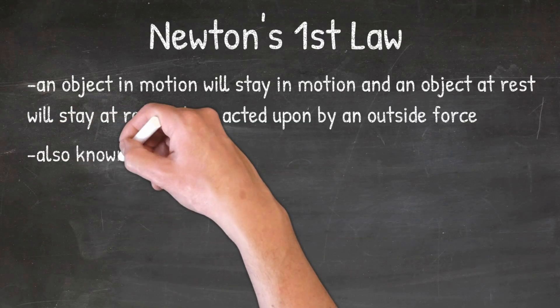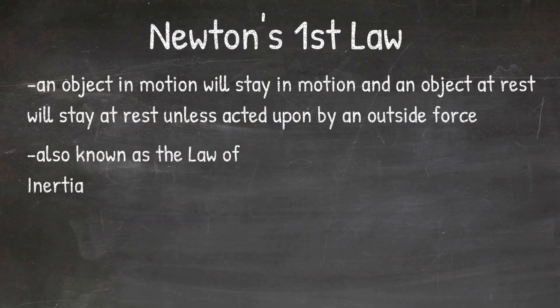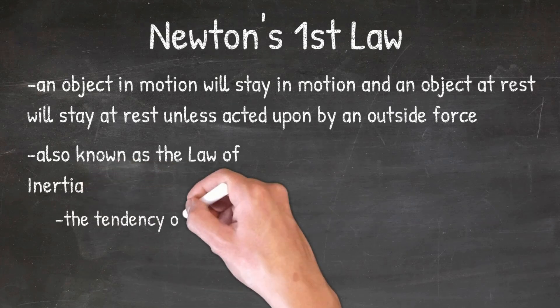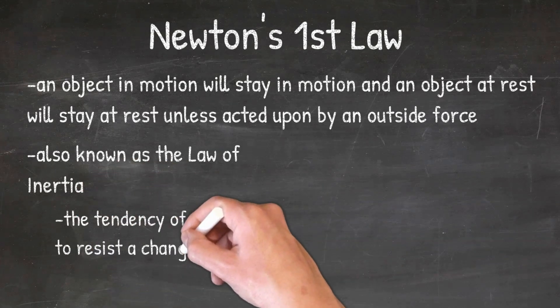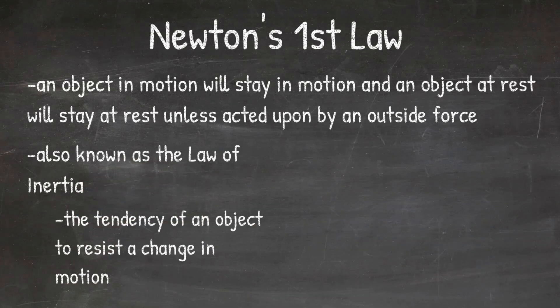Newton's first law is also known as the law of inertia. Inertia is the tendency of an object to resist a change in motion. If an object is resisting a change in motion, that means it wants to keep moving in the direction it was moving. It will take an outside force acting upon the object in order for it to change its motion.